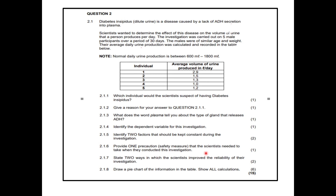Question 2.1.6: Provide one precaution — a safety measure that the scientists need to take when they conducted the investigation. It's only one mark. We are busy with COVID and wearing masks, so you could say wear masks. But in any scientific process, the person must wear gloves — to prevent contamination and any toxic substance from spilling on their hands. Or you can say wear a lab coat as well. The question just asks for the precaution, not the reason.